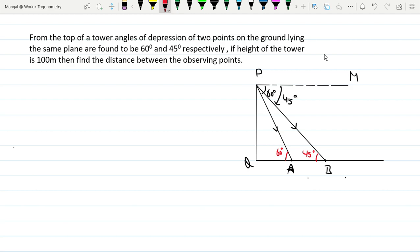If the height of the tower is 100 meters, then find distance between the observing points. Tower height is 100 meters. So two triangles, and tower is 100 meters. So A and B, between the distance. AB equals AB, so we need to find AB.